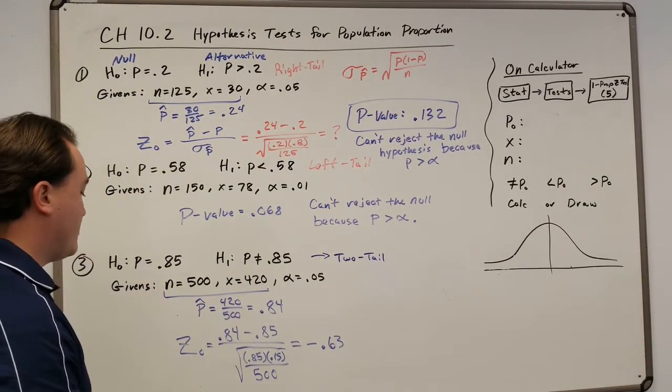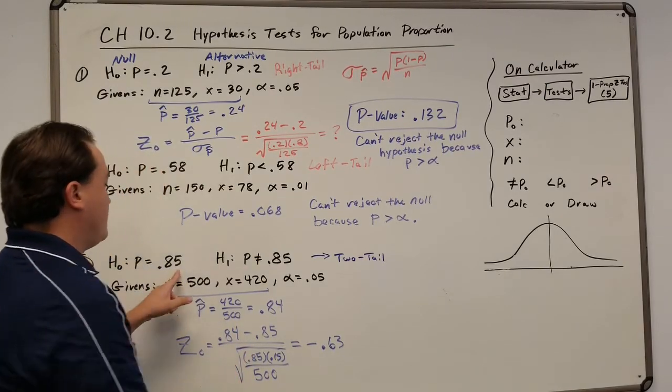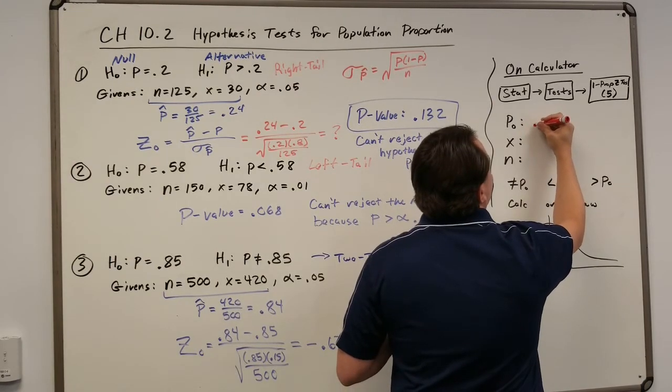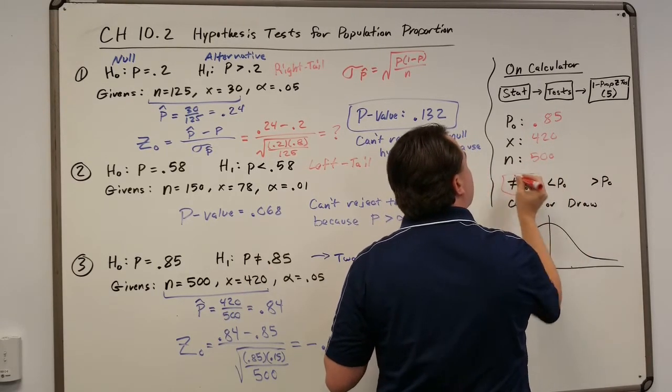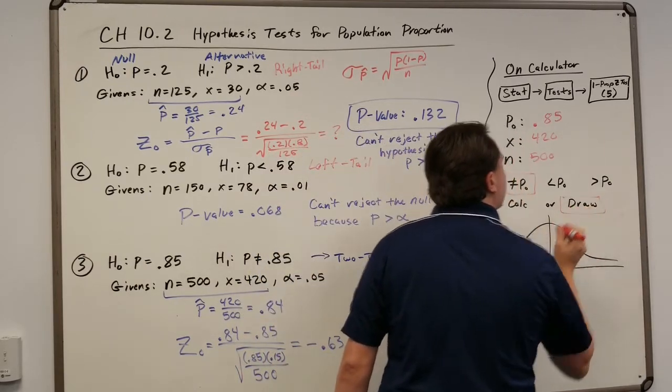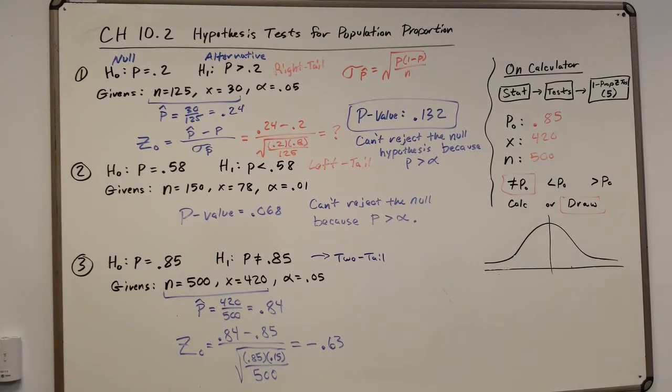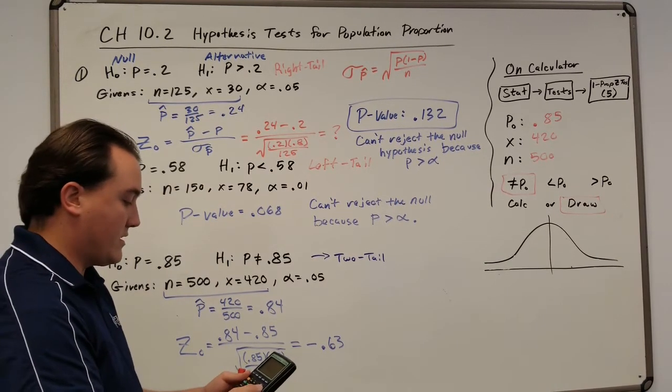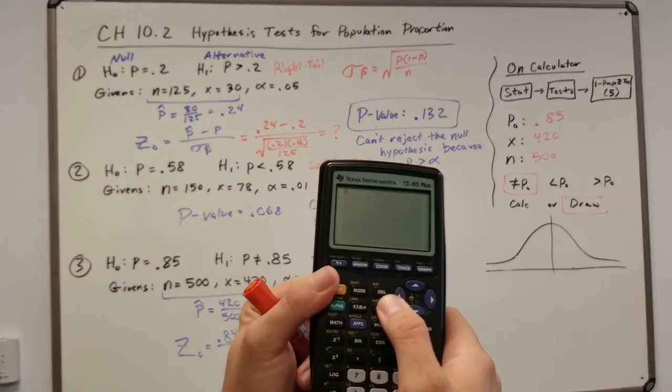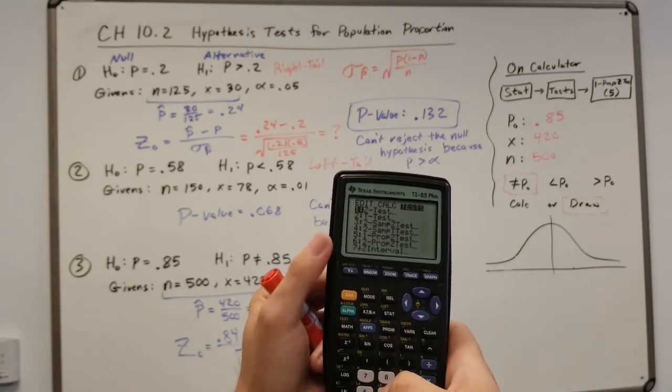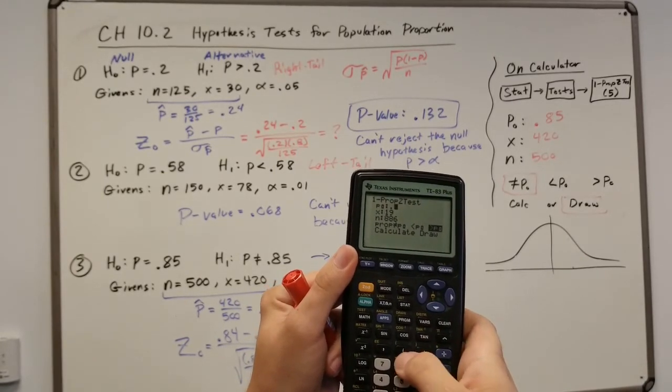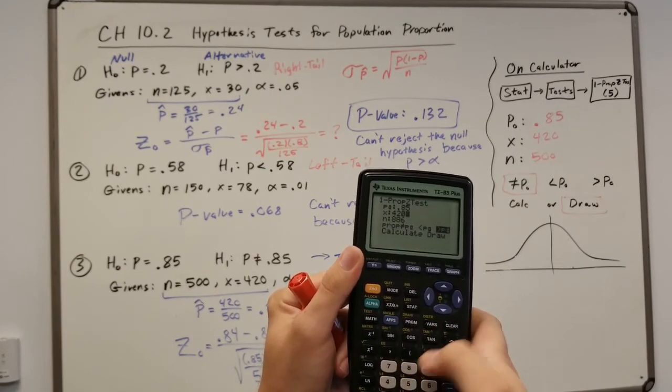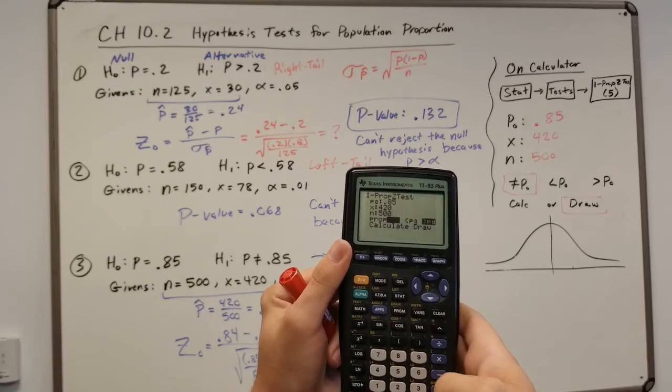But again, just going back to the calculator to figure out everything else. So we have a p-naught of 0.85, an x value of 420, 500 for n. It's not equal to test this time. I'm going to draw it. So we go to stat, tests, so scroll over. Then press 5 for the one proportion z test. We have a p-naught of 0.85, an x value of 420, 500 for an n value. Not equal to. We will draw it.